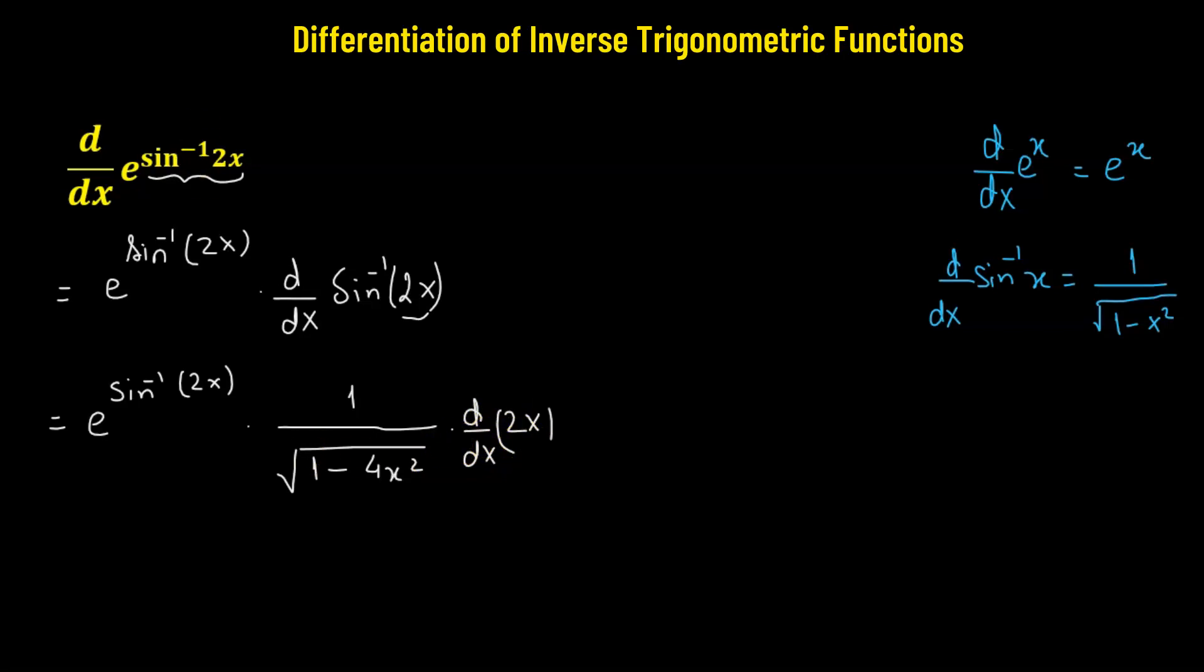So that means our final answer is e raised to the power of sine inverse of 2x, divided by square root of 1 minus 4x squared, and then we have 2, which will be multiplied to the final answer. So this is the derivative of the given function.